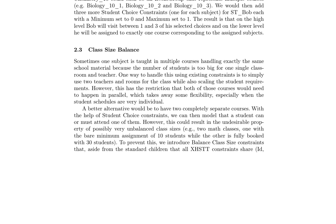To manage class size balance, a better approach involves creating separate courses for subjects with large student numbers, utilizing student choice constraints to ensure students can choose one of the courses. However, this may result in unbalanced class sizes. To prevent this, balance class size constraints are introduced, which enforce a minimum and maximum number of students per class, thereby balancing class sizes.